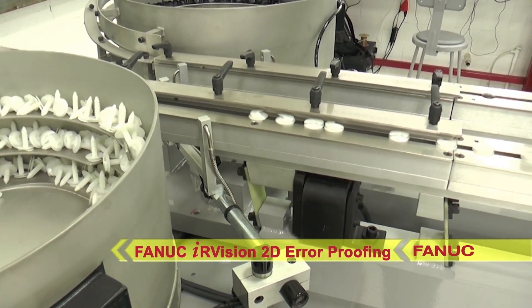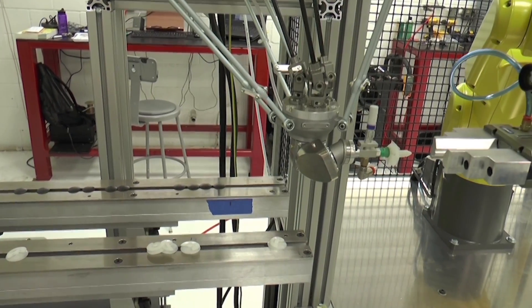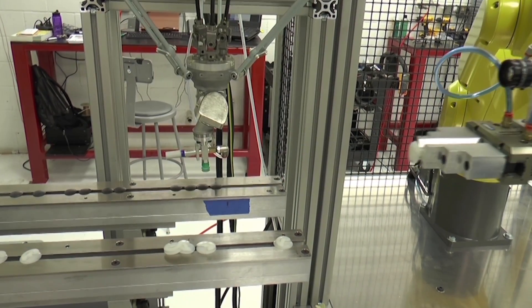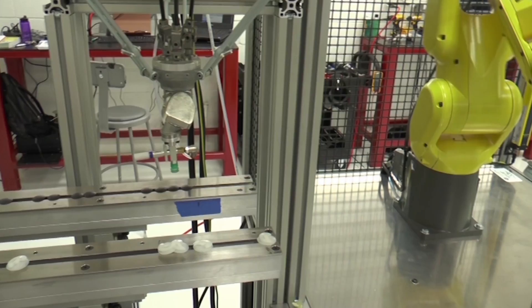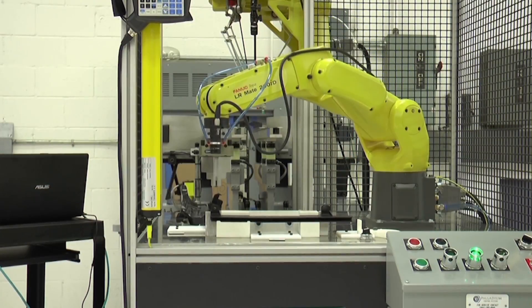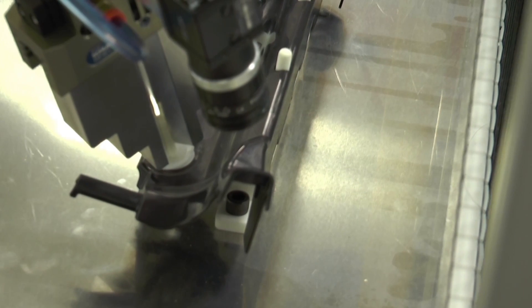The FANUC M1IA .5A robot uses a 2D camera and vision guidance to pick the part off of the parts feeder and feeds it to the FANUC LRMate 200ID robot for assembly. The FANUC LRMate 200ID robot assembles the molded part by inserting each plastic tab into its place in the part.